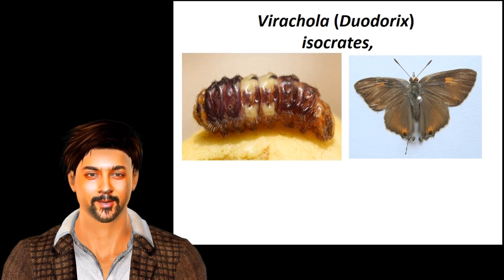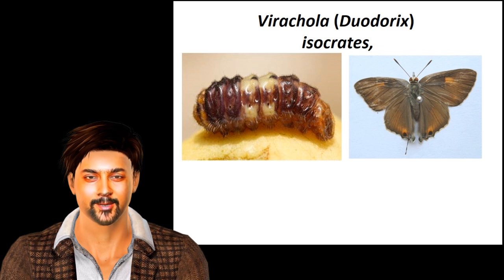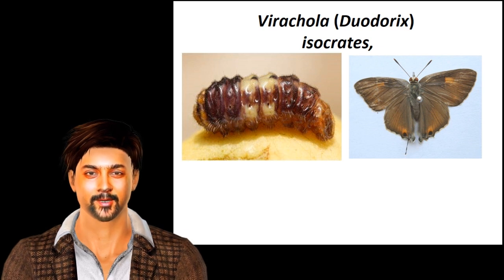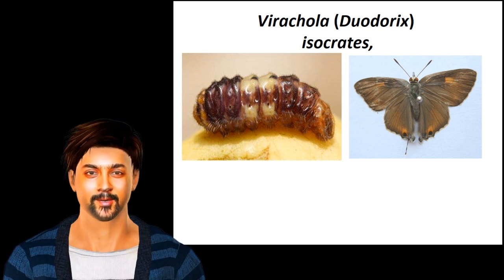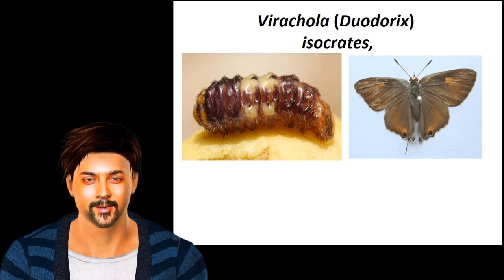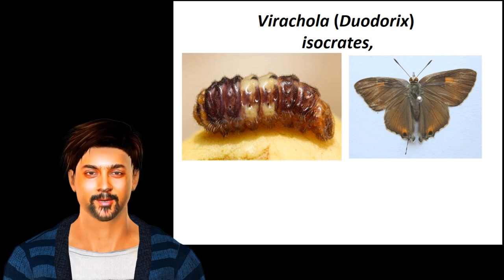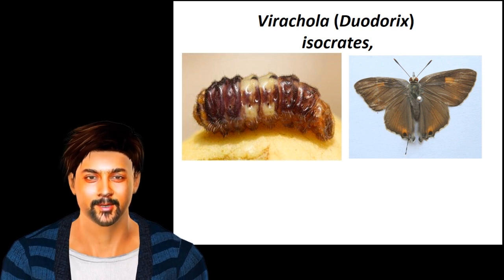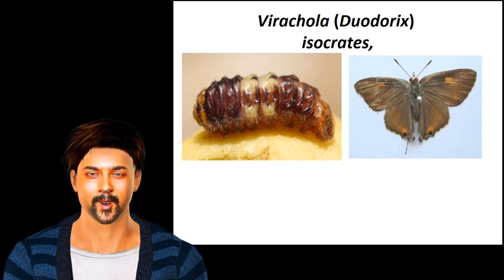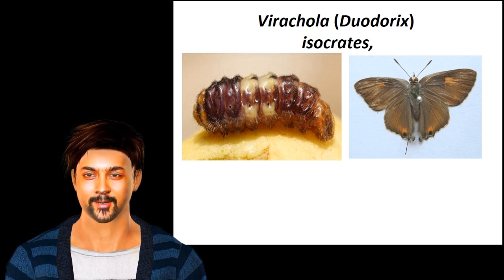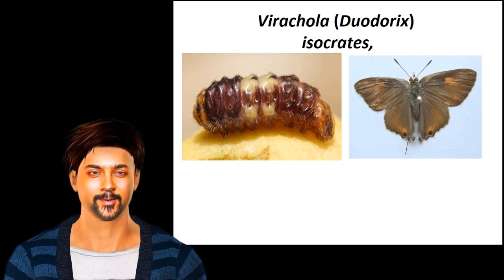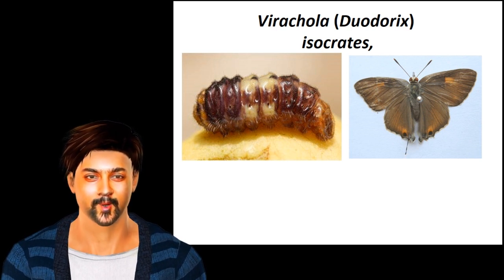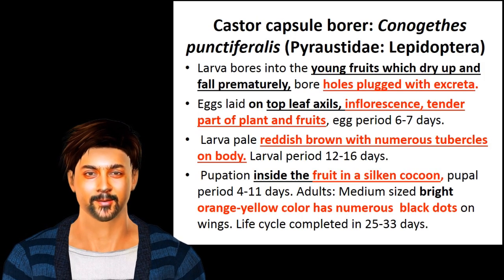Larvae pupate inside the fruit, but occasionally outside, attaching themselves to the stalk of fruits. The pupal period is 7 to 34 days. The male adult looks like a glossy bluish-violet, whereas the female is brownish-violet with an orange patch on the forehead. It undergoes 4 generations per year. You can see both larvae and adults of Deudorix isocrates.